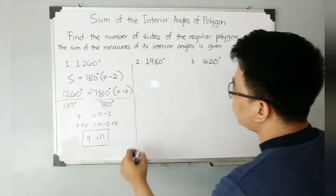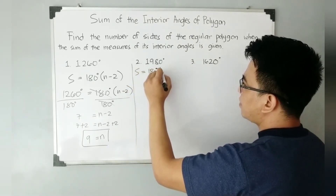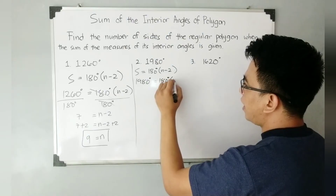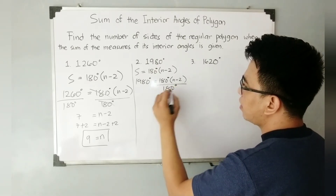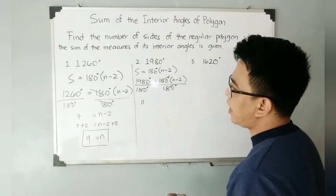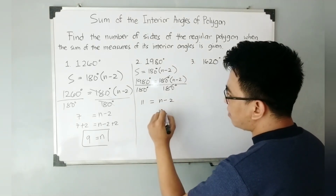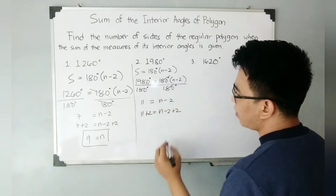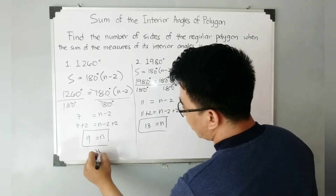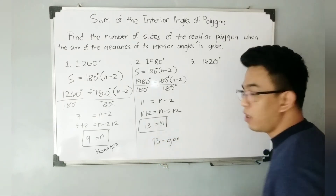For item number 2, we are given a sum of 1,980 degrees. So S = 180(N - 2), and substituting, 1,980 = 180(N - 2). Dividing both sides by 180, we get 1,980 ÷ 180 = 11, so 11 = N - 2. Adding 2 to both sides: N = 13. Since N = 13, this is a 13-sided polygon, or a 13-gon.